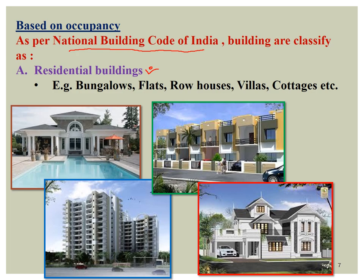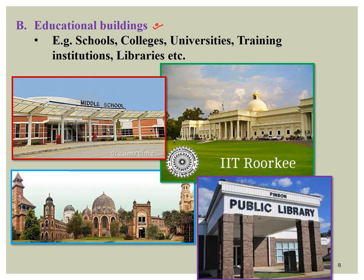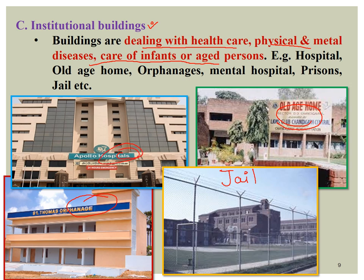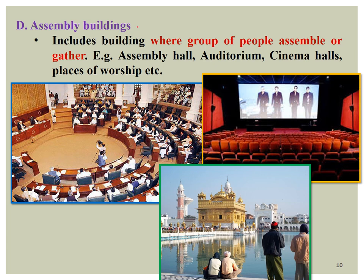Educational buildings, where education is delivered, also cover training institutes and public libraries. Then institutional buildings, which deal with healthcare, physical and mental disease care, care for infants, aged persons — for example, old age homes, jails, orphanages, and hospitals. All these are covered under institutional buildings. Next come assembly buildings, where people gather for discussion or enjoyment.